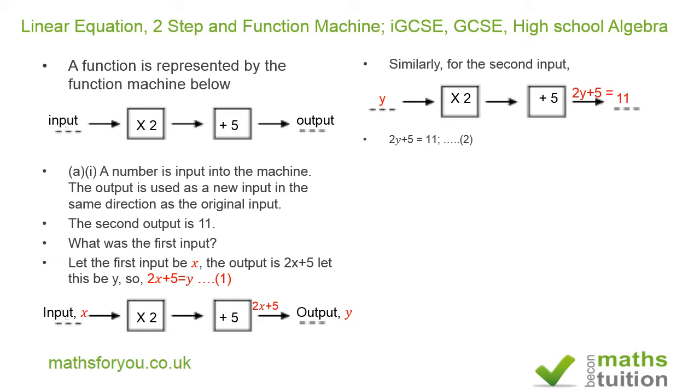In which case if we say 2y is equal to 6 and y is equal to 3. If we then substitute y is equal to 3 into the first equation, we have that 2x plus 5 is equal to 3. So 2x is equal to minus 2, in which case x is equal to minus 1. So our first input is minus 1.